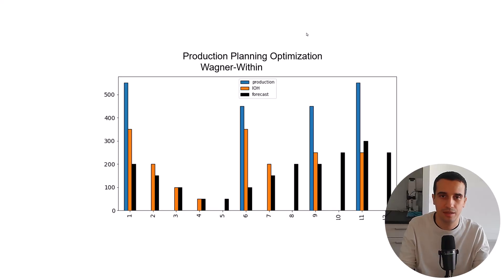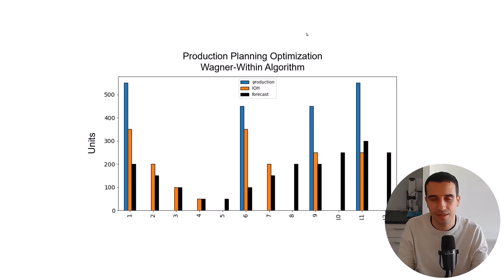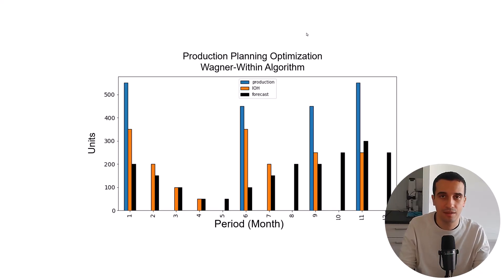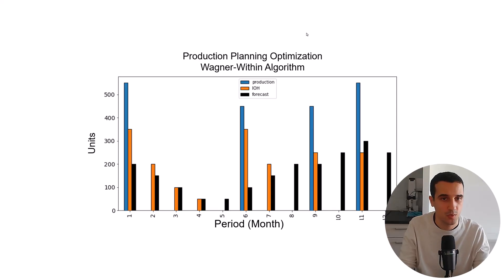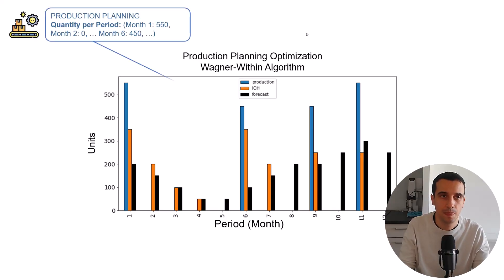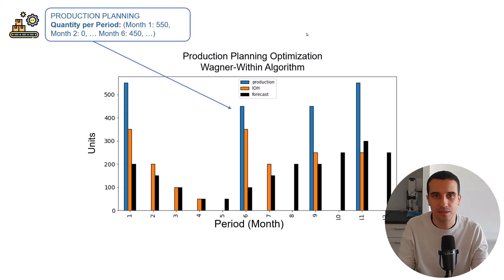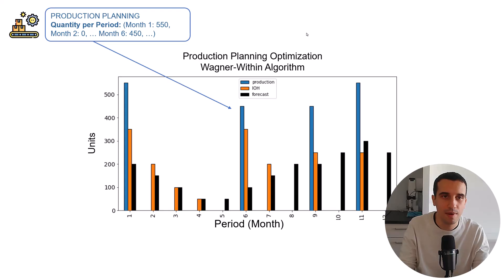The results look like the chart here. On the y-axis, you have the quantities — it can be units, pallets, or boxes. On the x-axis, you have the period; here we are talking about months, and we have 12 months. In blue, you have the quantity produced per month. What we can see is that we only have four batches — the algorithm meets the demand for the 12 months in only four batches.